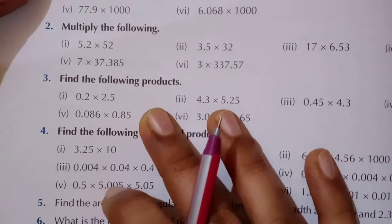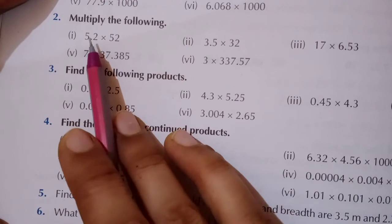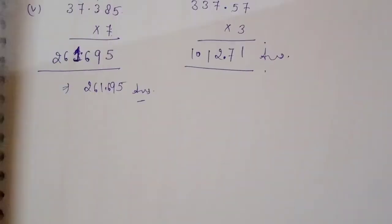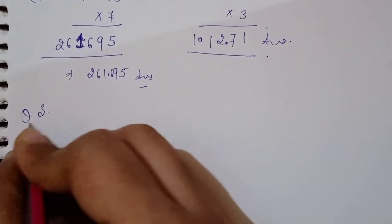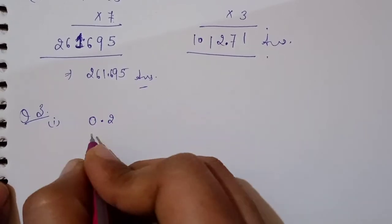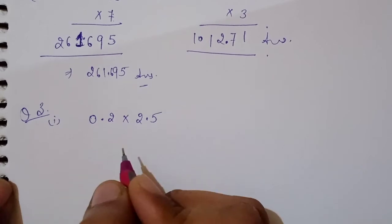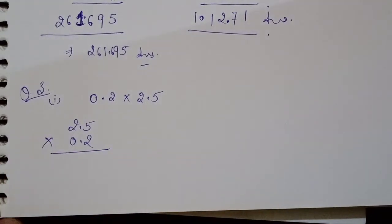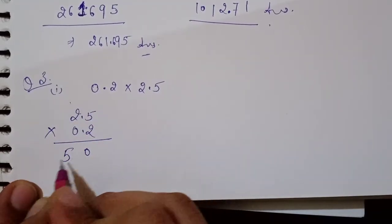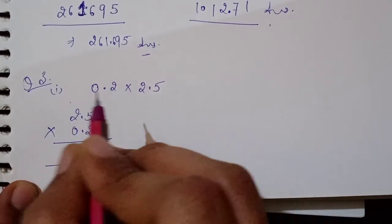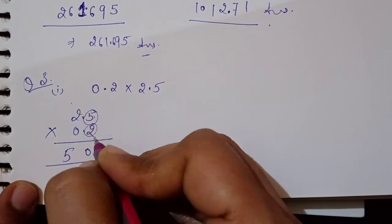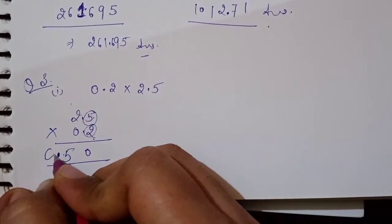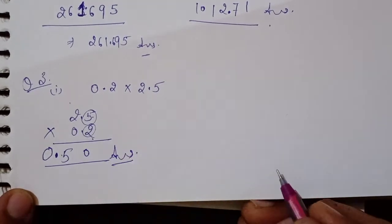Now question number three — again find the product. The difference is that here both numbers have a decimal place. Let's see how multiplication will take place. First part: 0.2 × 2.5. I write the greater number on top for easier multiplication: 2×5=10, 2×2=4; then the next digit is zero — no benefit multiplying by zero.